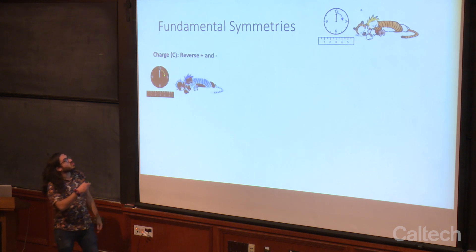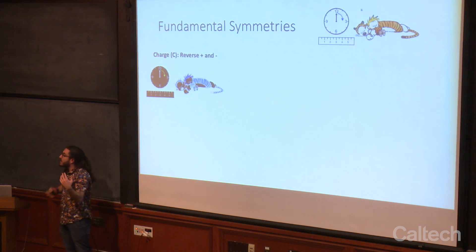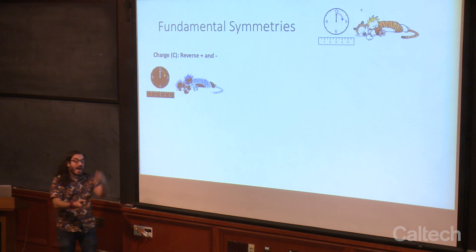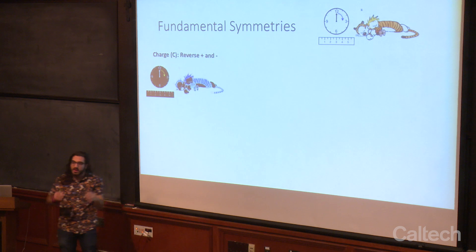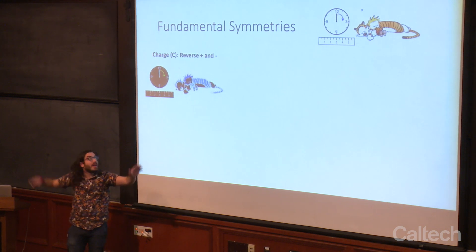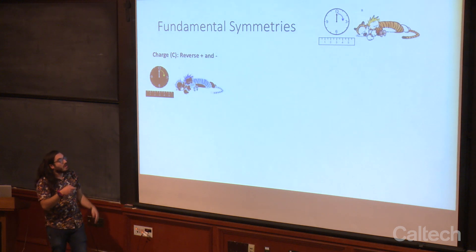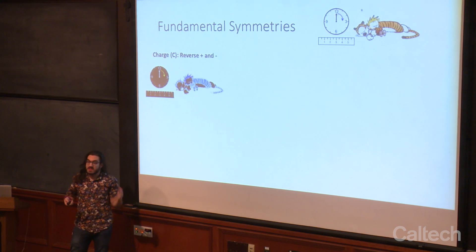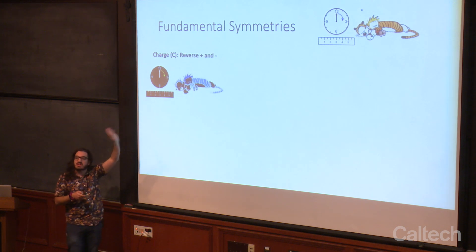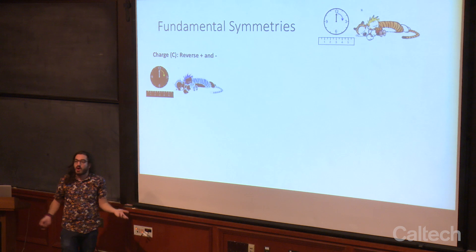The first symmetry I want to talk about is charge symmetry. All around us we're made up of atoms — these really tiny things. Atoms have pluses and minuses, just like a battery has a plus and a minus side. What if we swapped all the pluses and minuses in the universe? Would you be able to do an experiment to tell the difference? Originally, over a hundred years ago, scientists thought this must be a good symmetry — you can't tell the difference. Positive and negative are arbitrary.